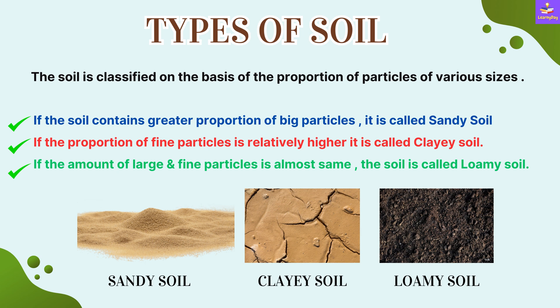Now let us talk about the types of soil. Soil is classified on the basis of the proportion of particles of various sizes. If the soil contains a greater proportion of big particles, it is called sandy soil. If the proportion of fine particles is relatively higher, it is called clayey soil. And if the amount of large and fine particles is almost the same, it is called loamy soil.